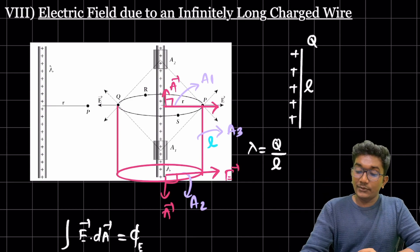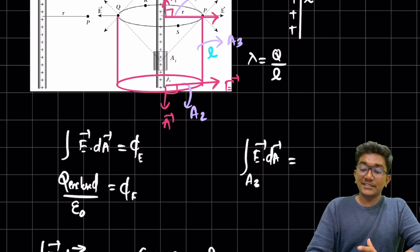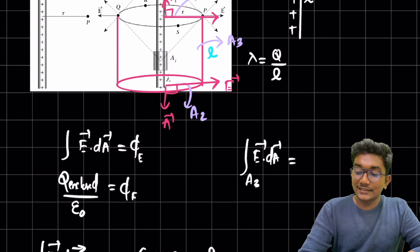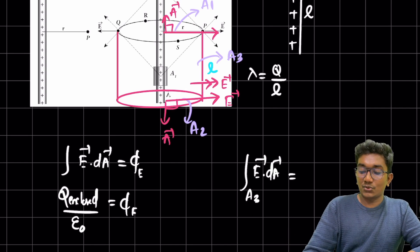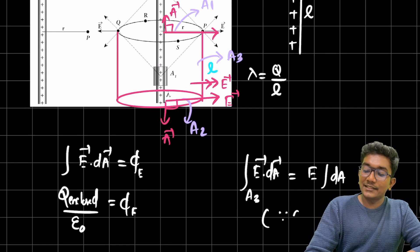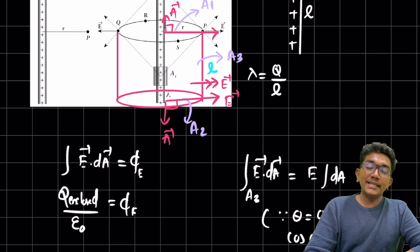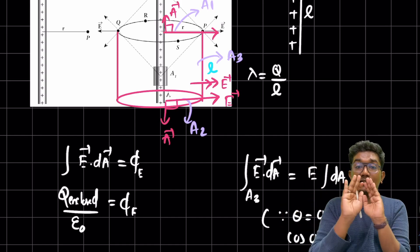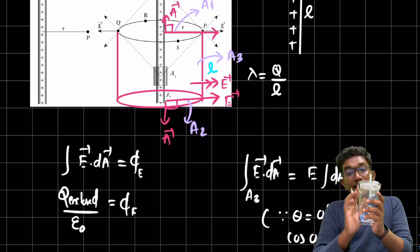Now we only need to consider A3, the curved surface area of the cylinder. For this surface, the electric field and the area vector both point in the same radial direction, so theta equals 0 degrees and cos 0° = 1. Therefore, the integral of E dot dA for A3 becomes E times the integral of dA, which is E multiplied by the total curved surface area.